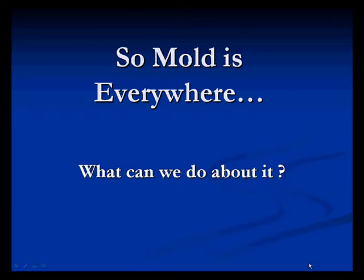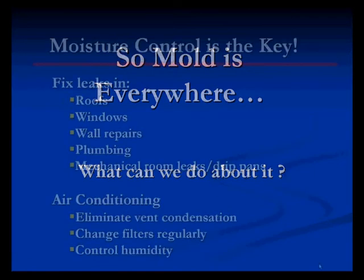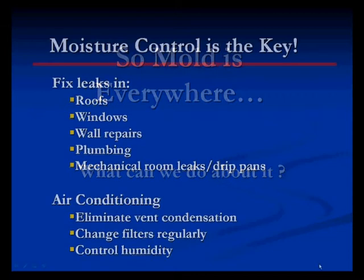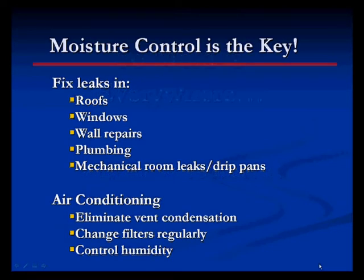So mold is everywhere — what can we do about it? The single biggest factor in retarding mold growth is to control moisture inside a building. Some sources of moisture include water from roof leaks, broken pipes, high humidity, and penetration from the ground.